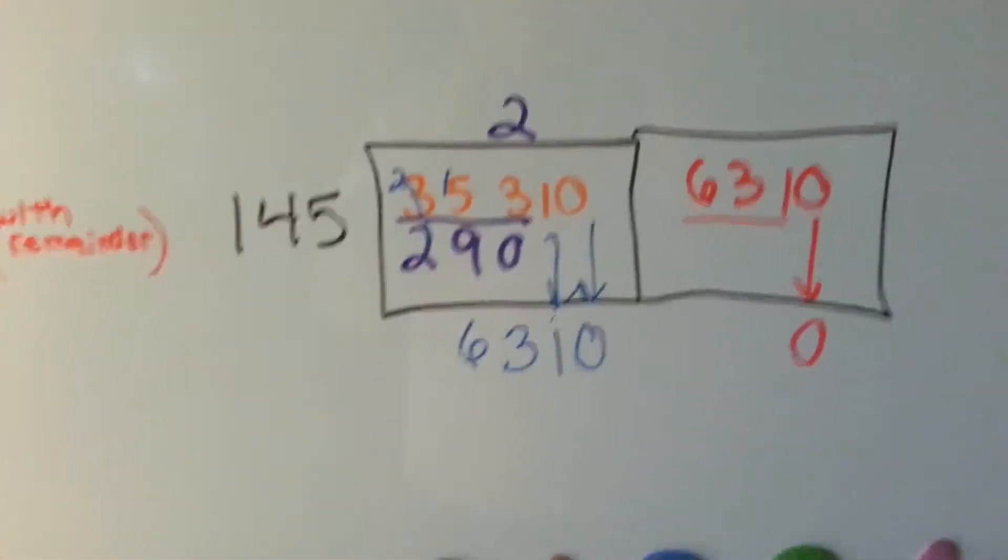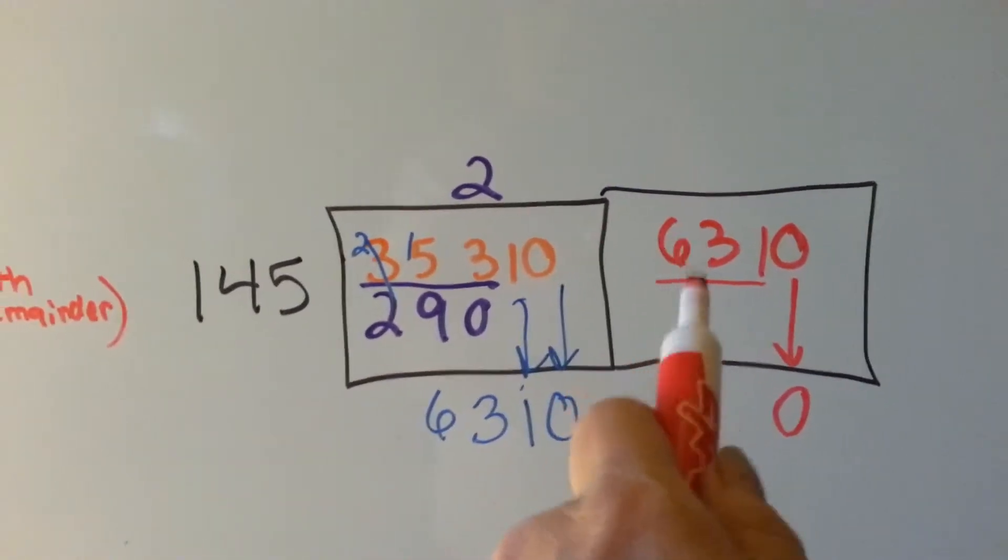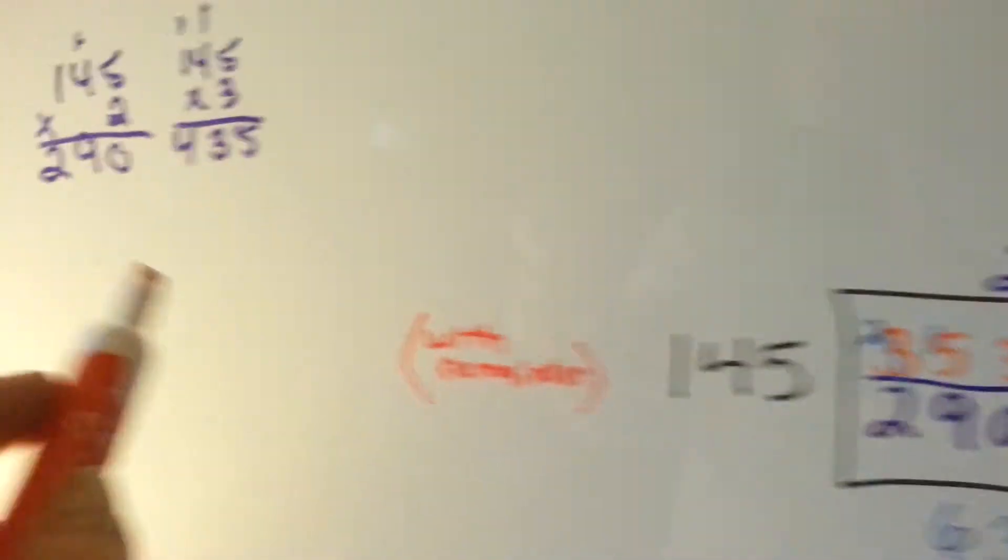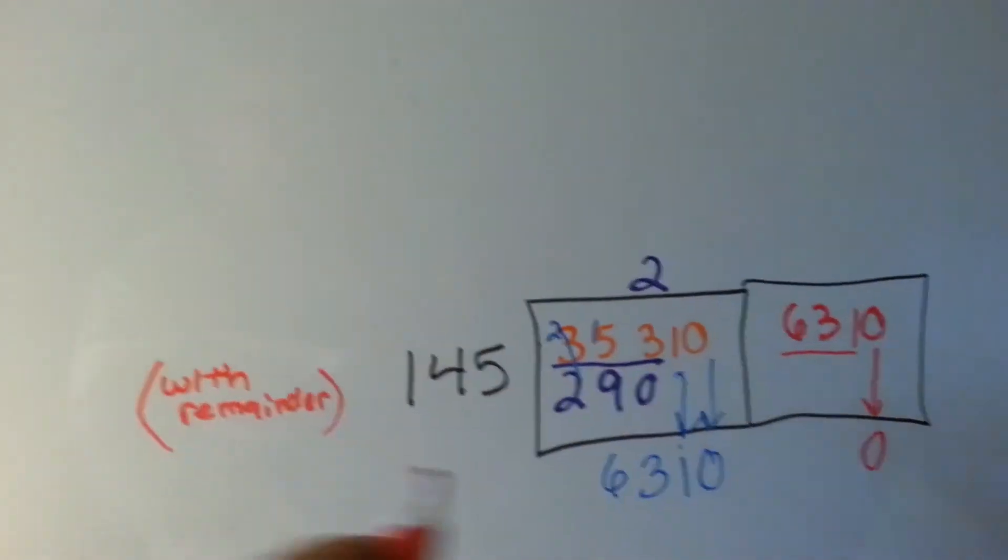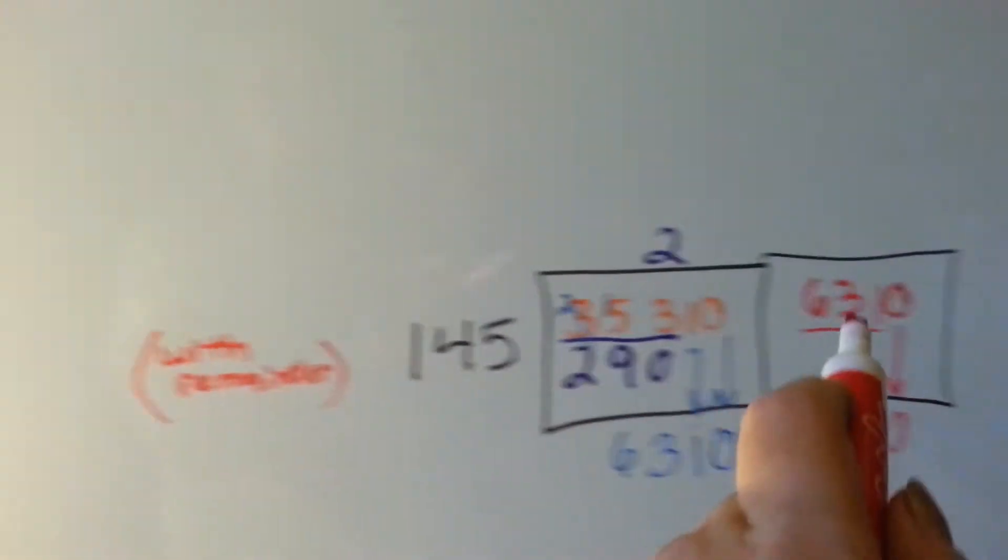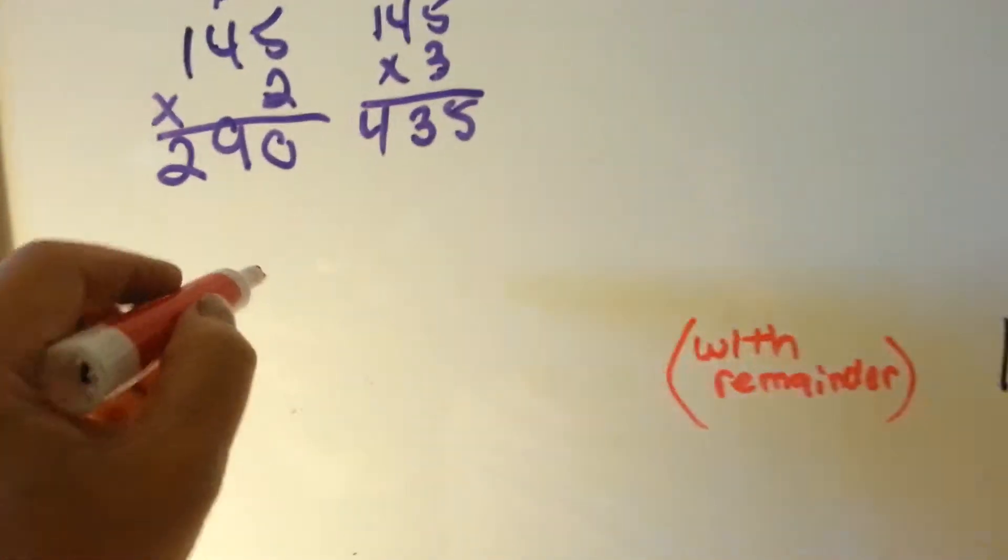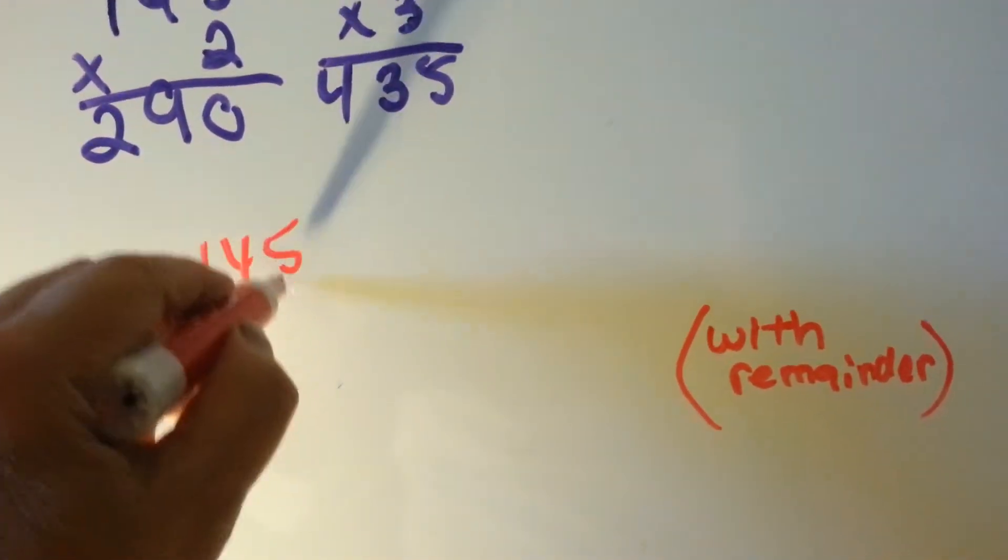Can it go into 631? Yeah, it can. So, this is the number we're going to be putting it into. And this 0 is going to drop down, isn't it? Okay. So, how many times can 145 go into 631? Well, we were doing some math over here, and 145 times 3 is 435. We're trying to get into 631, though. Let's try one more time.